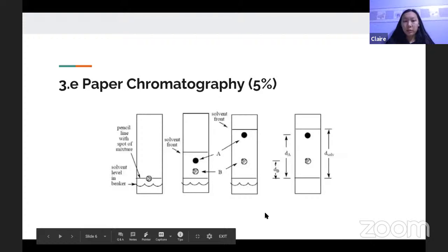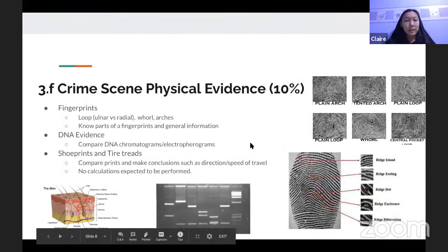And something important to note for the paper chromatography is you want to start them earlier on, because if you don't, then you'll run out of time, and the solvent won't rise all the way to the top, and you won't get an accurate result. Okay, so the next part is crime scene physical evidence, which is 10% of the exam.